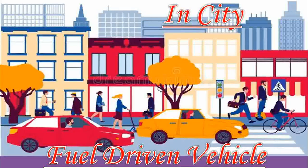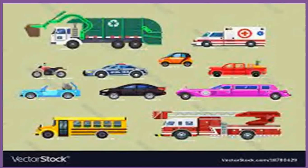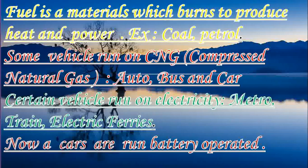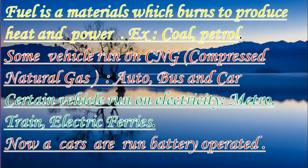In cities, fuel-driven vehicles are used. Fuel is a material which burns to produce heat and power — for example, coal and petrol. Vehicles that use petrol and diesel as fuel are bus, car, truck, ship, and aeroplane. Some vehicles run on CNG also, and the full form of CNG is Compressed Natural Gas — like auto, bus, and car. Certain vehicles run on electricity also, like metro, train, electric ferries, etc.